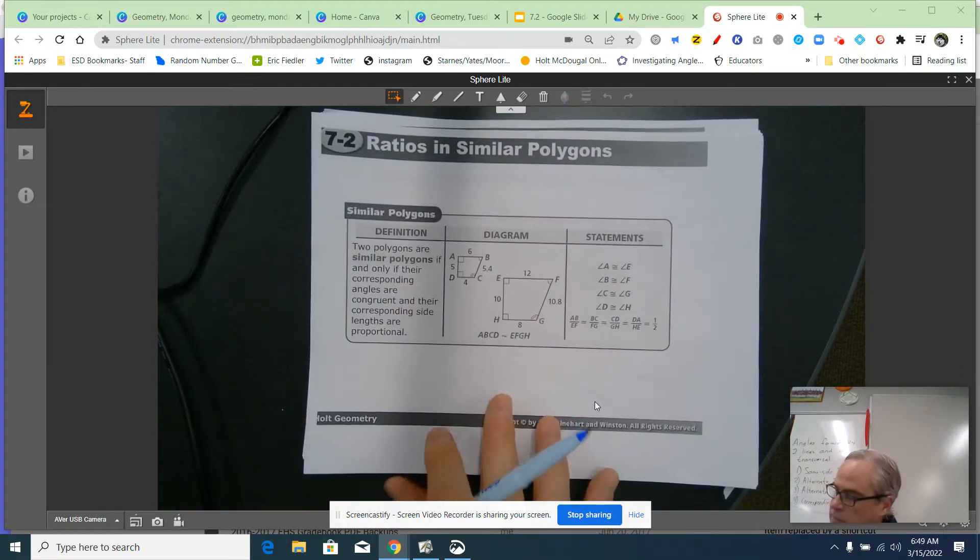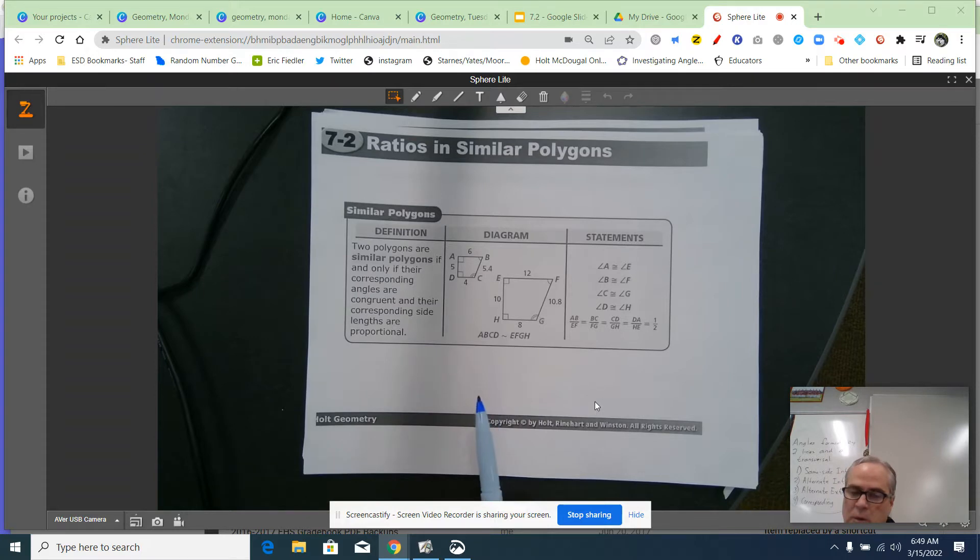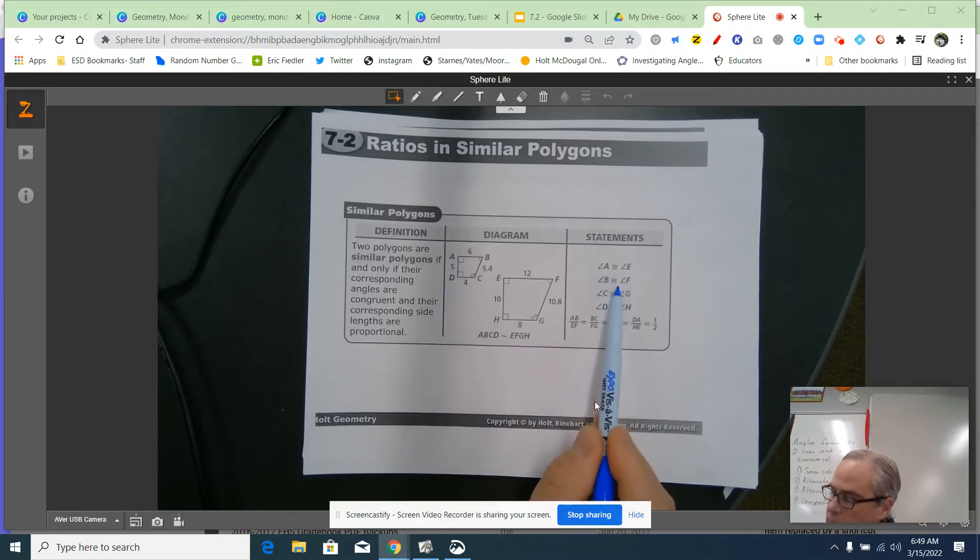And here's a definition, official definition. Two polygons are similar if and only if the corresponding angles are congruent and their corresponding side lengths are proportional. So all the angles have to have a congruent corresponding angle, and all the side lengths have to be in the same proportion. So take a look at these two quads right here. They look kind of like trapezoids. In fact, they are trapezoids. And here they make the statement about all four of the angles being congruent. So all the angles have to be the same.